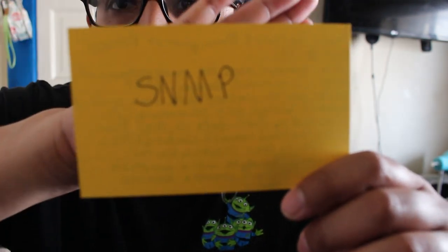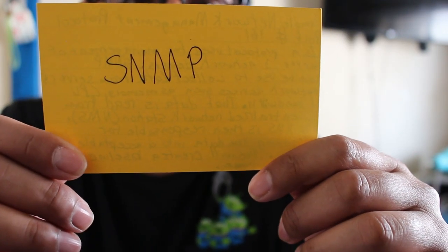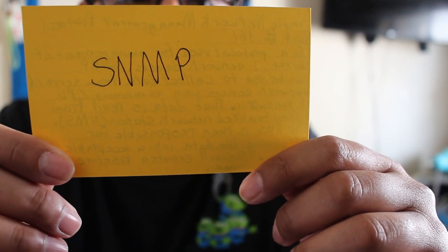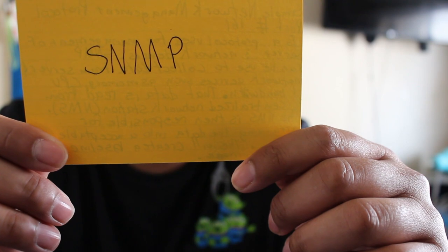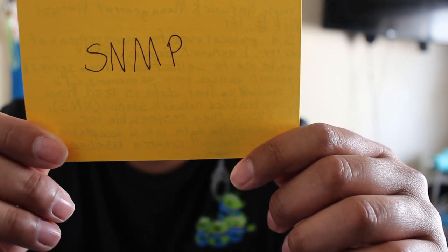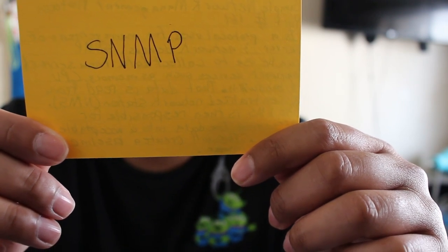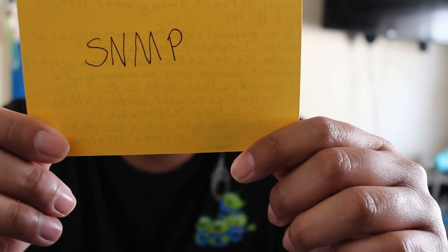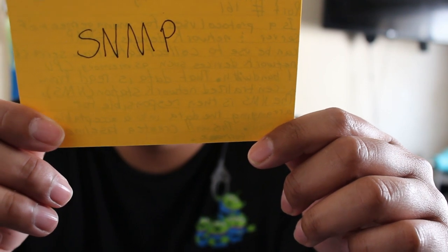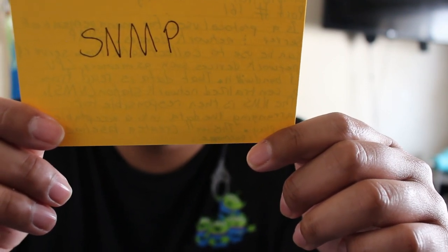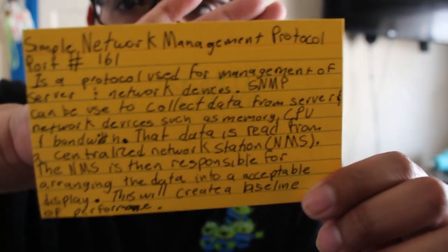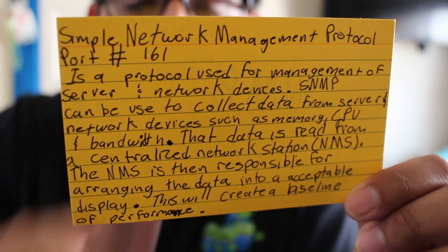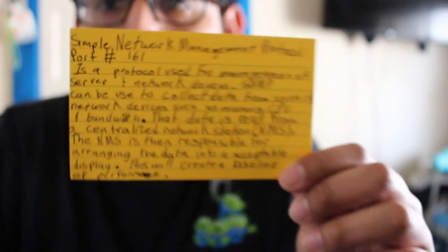Next is SNMP — Simple Network Management Protocol — port 161. It is a protocol used for management of servers and network devices. SNMP can be used to collect data such as memory and bandwidth from devices. That data is read from a central network station known as NMS, which arranges data into a display to create a performance baseline. It runs on port number 161.